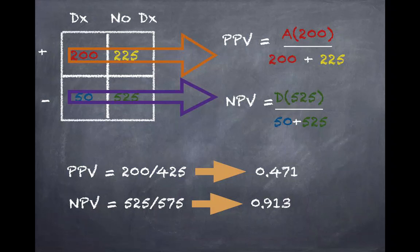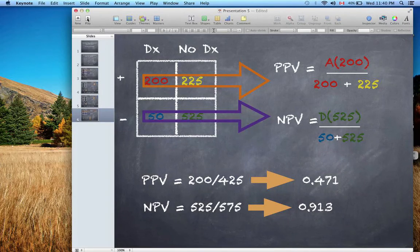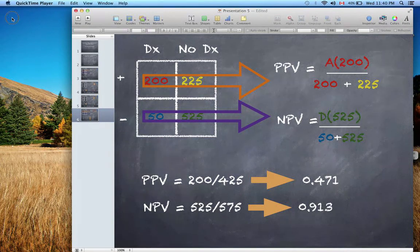We now have our final answers: a positive predictive value of 47.1% and a negative predictive value of 91.3%. Hopefully you found this video helpful and a bit easier to follow than the first one. As always, thanks for hanging in there.